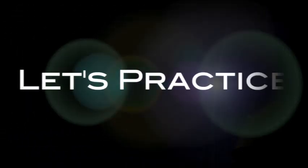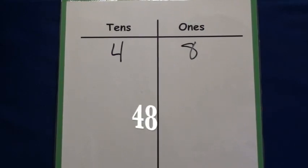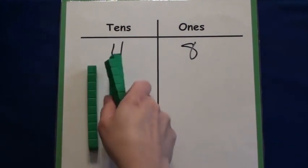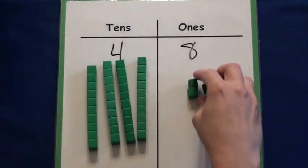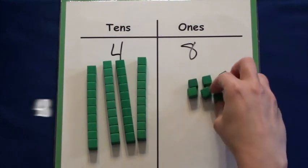Let's practice a few more difficult numbers. Forty-eight. There are four tens and eight ones. The four does not represent four cubes. It represents four groups of ten. Let's count. Ten, twenty, thirty, forty. The eight represents eight cubes.